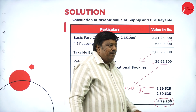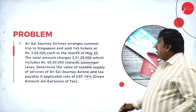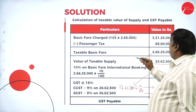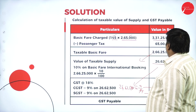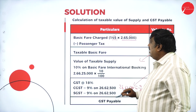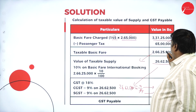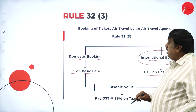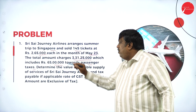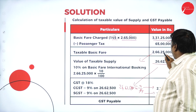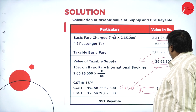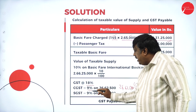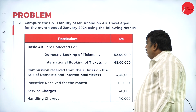To summarize the working: 145 tickets × ₹2,65,000 = ₹3,31,25,000. Deducting taxes of ₹65,00,000, the taxable basic fare is ₹2,66,25,000. Since it is international booking, 10 percent on basic fare gives a taxable value of ₹26,62,500. On this, 9 percent CGST and 9 percent SGST are levied, totalling ₹4,79,250 as the GST payable to the government.